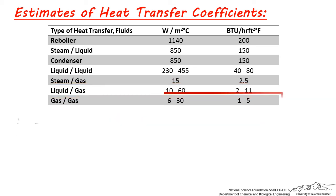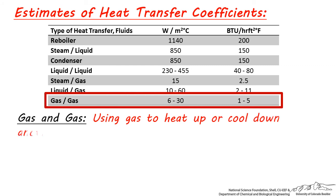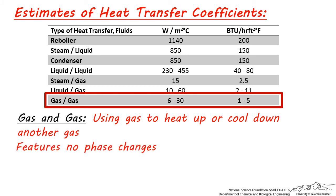The lowest heat transfer coefficients are seen with gases heating up or cooling down other gases using simple heat. There is no phase change, so no latent heat — only convective heat transfer, which is a lot less effective than conductive per unit area. This means that a large heat exchanger will most likely need to be used for heat transfer between gases. Thanks for watching.